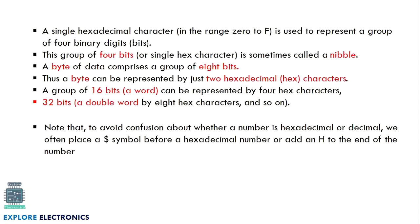A single hexadecimal character consists of four binary bits — those four bits are called a nibble. Eight bits are called a byte. For example, 1011 is a nibble; an eight-bit number is a byte. Sixteen bits is called a word, and 32 bits is called a double word. Therefore: four bits require one hex digit, eight bits require two hex digits, 16 bits require four hex digits, and 32 bits require eight hexadecimal characters.